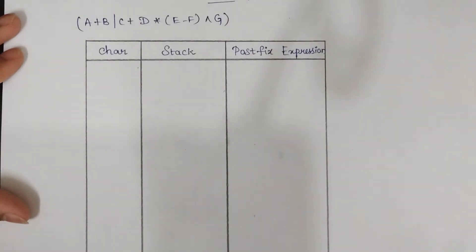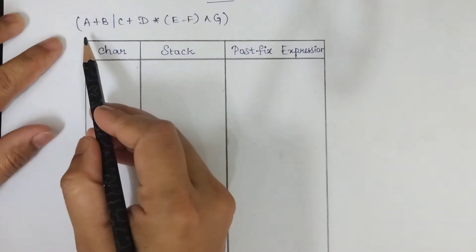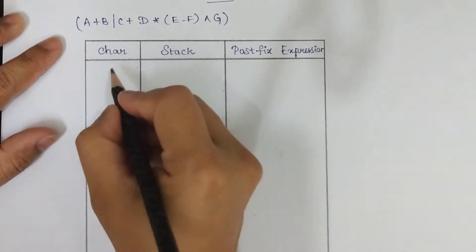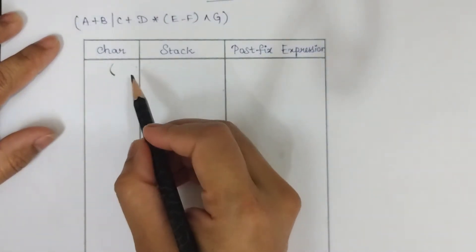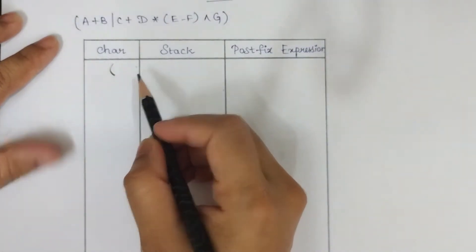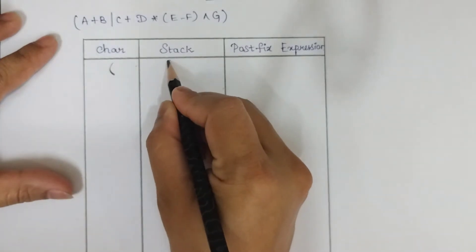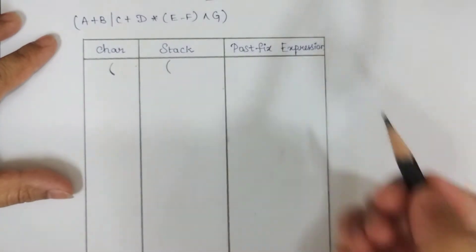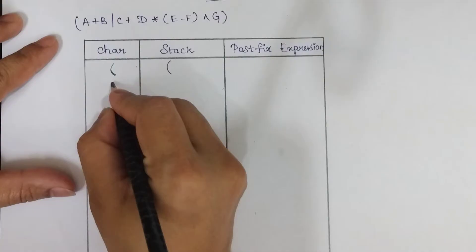The first rule is to scan the given infix expression from left to right, character by character. The first character we have is open parenthesis — whenever open parenthesis is scanned, directly insert that open parenthesis into the stack.